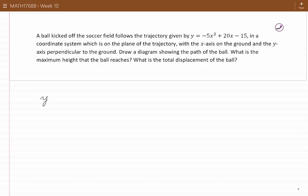y is equal to minus 5x squared plus 20x minus 15. To put this in the standard form, that is the form y equals a times (x minus h) squared plus k for some h and some k, we factor minus 5 from the first two terms.